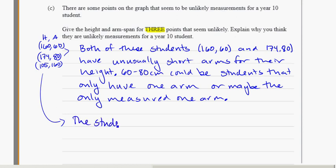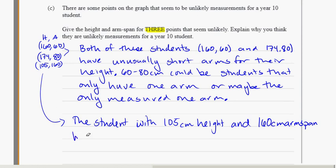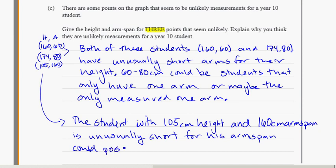The student with 105 centimeter height and 160 centimeter arm span is unusually short for his arm span. A possible reason for this could be, you know, could possibly be an amputee.